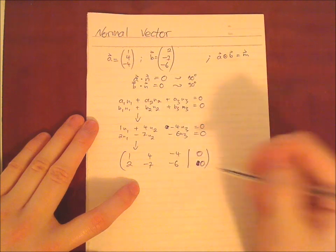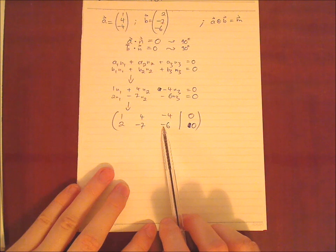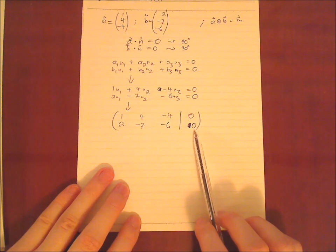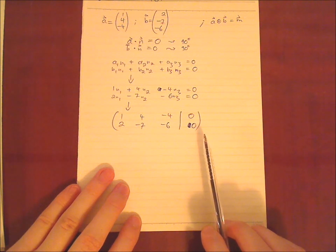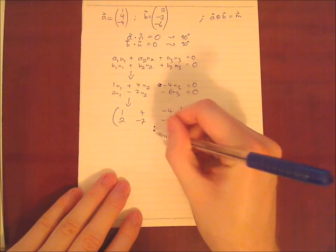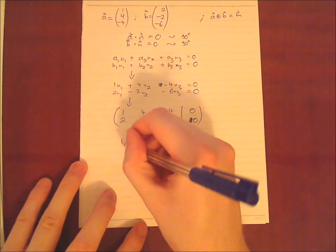And at this point I don't want to show actually how to solve the matrix with the Gaussian elimination procedure. I have a different video for that you can watch and I just take a result which I calculated with a calculator which can do this. So the result of this matrix will be the following.